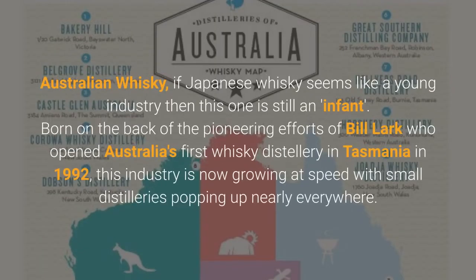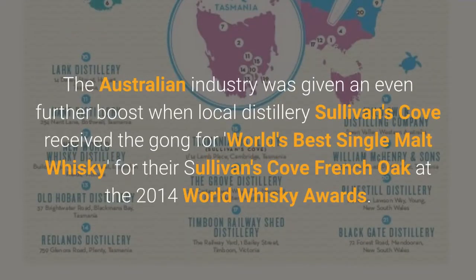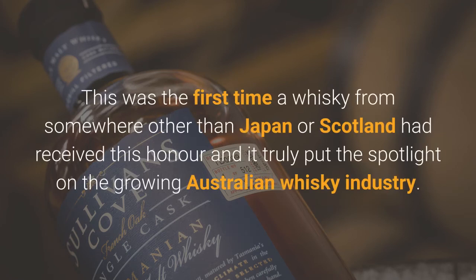Australian whiskey: if Japanese whisky seems like a young industry, then this one is still an infant, born on the back of the pioneering efforts of Bill Lark, who opened Australia's first whiskey distillery in Tasmania in 1992. This industry is now growing at speed with small distilleries popping up nearly everywhere. The Australian industry was given an even further boost when local distillery Sullivan's Cove received the gong for World's Best Single Malt Whisky for their Sullivan's Cove French Oak at the 2014 World Whisky Awards. This was the first time a whisky from somewhere other than Japan or Scotland had received this honour, and it truly put the spotlight on the growing Australian whiskey industry.